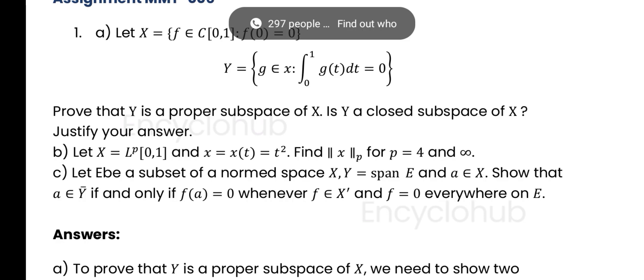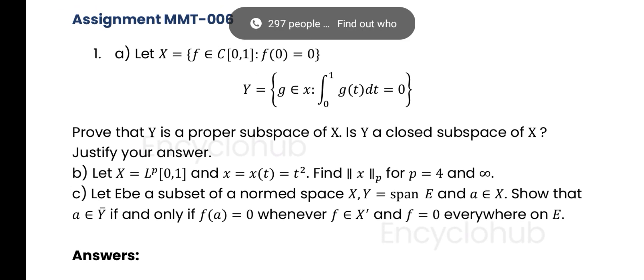In this question, let X equal to the set {f element of C[0,1]: f(0) = 0}, and Y equals {g element of X: integral from 0 to 1 of g(t)dt = 0}. Prove that Y is a proper subspace of X and Y is a closed subspace of X. Justify your answer.